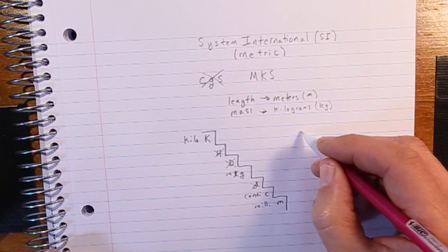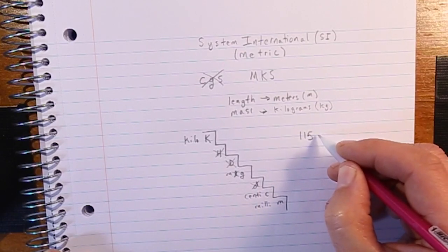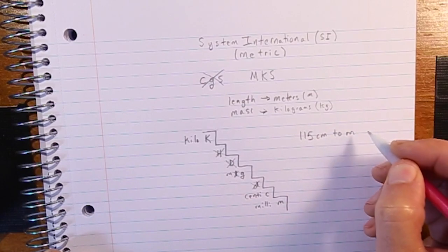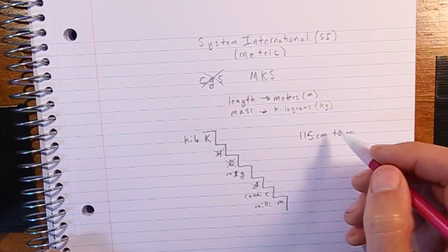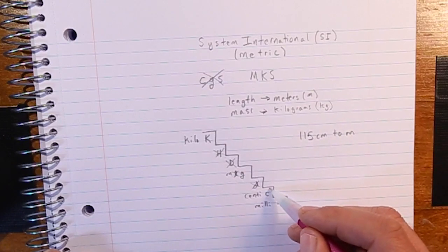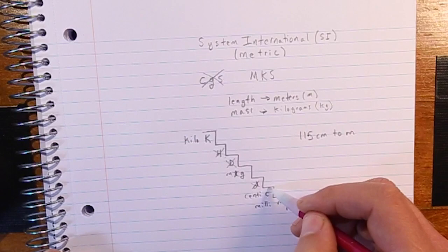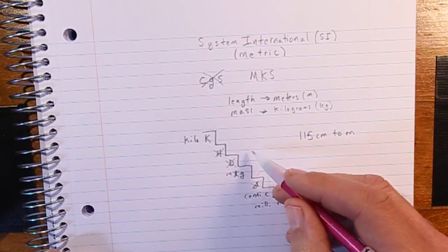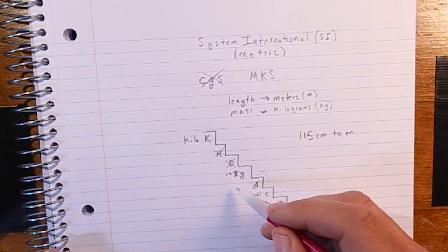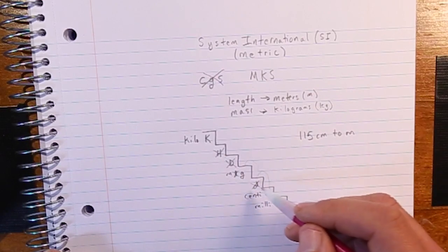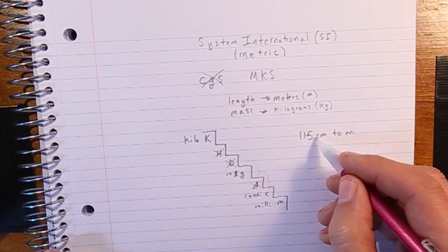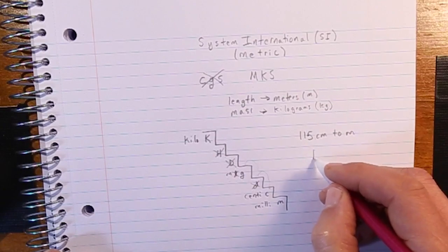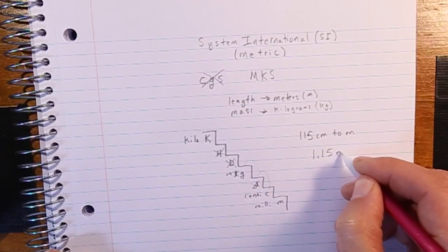Let's do a couple of practice problems. Say we have 115 centimeters and want to convert that to meters. We start on the centimeter step and move to the meter step — that's two steps. We went up the staircase, which means moving left, so we move our decimal place two places to the left.